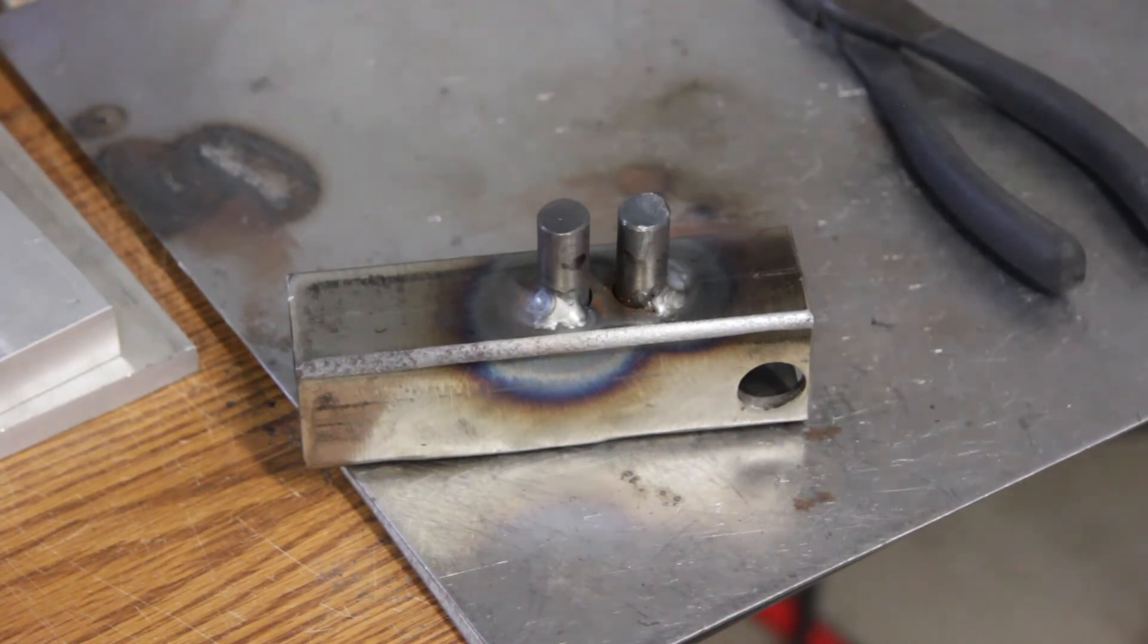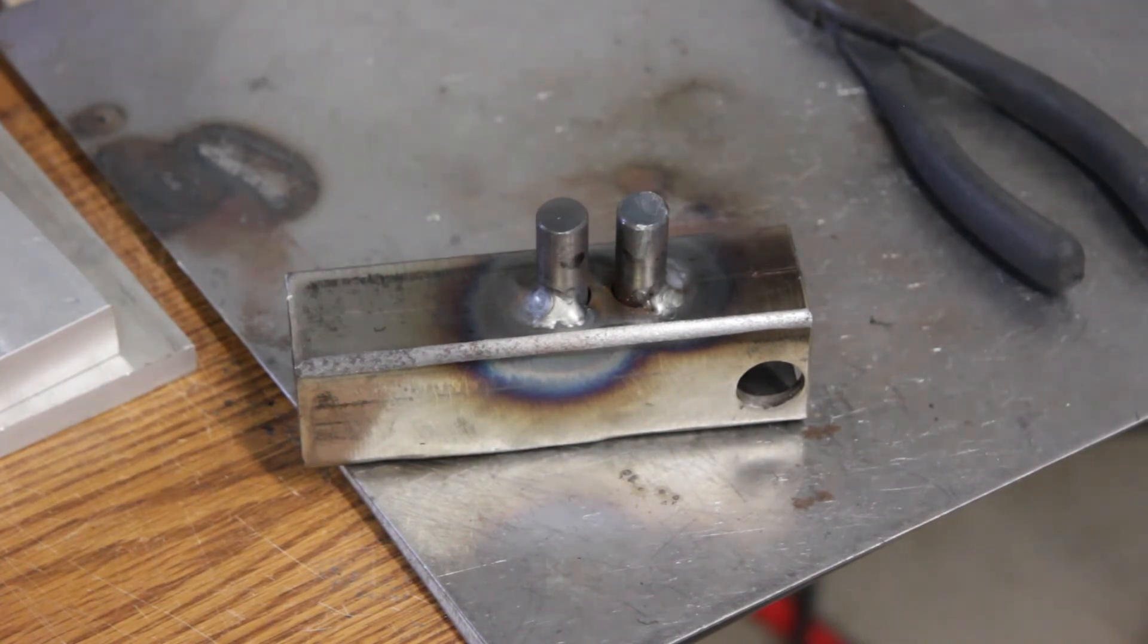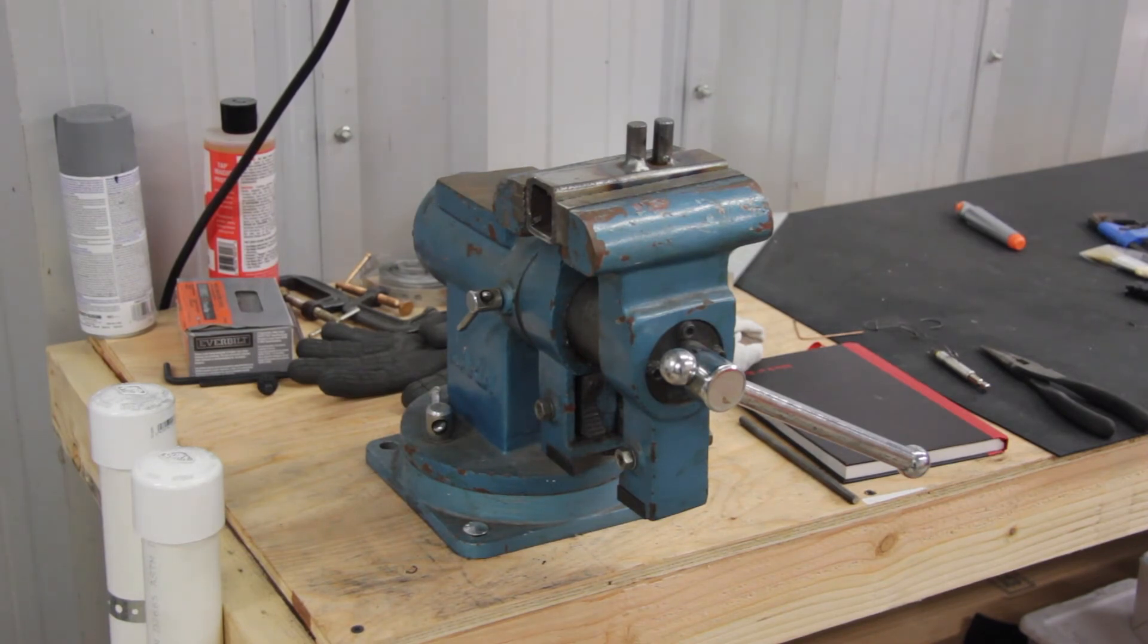We've welded the half inch rods to the square tube. We're going to let it cool down, and then we'll try to do some quarter inch bending to see how it works. Okay, let's try to bend a real tight bend in a piece of quarter inch rod.